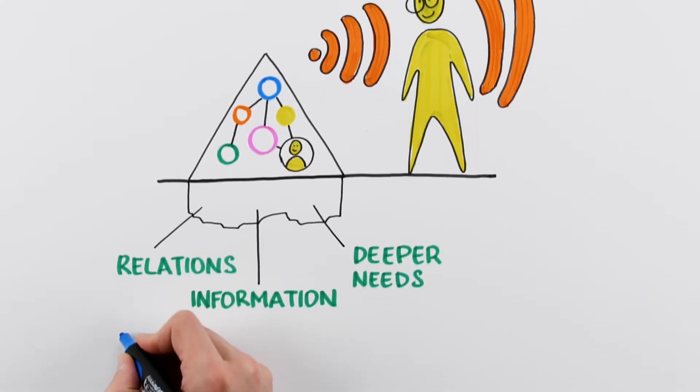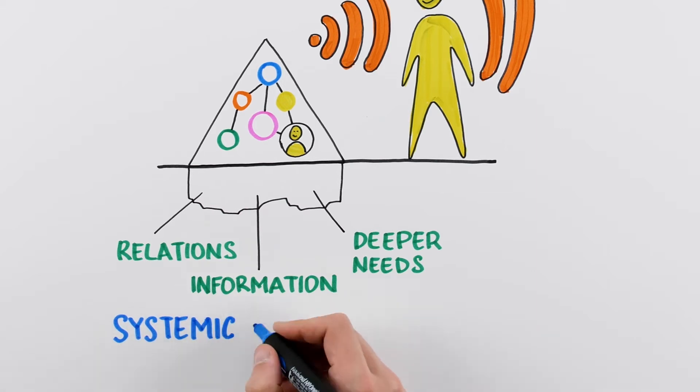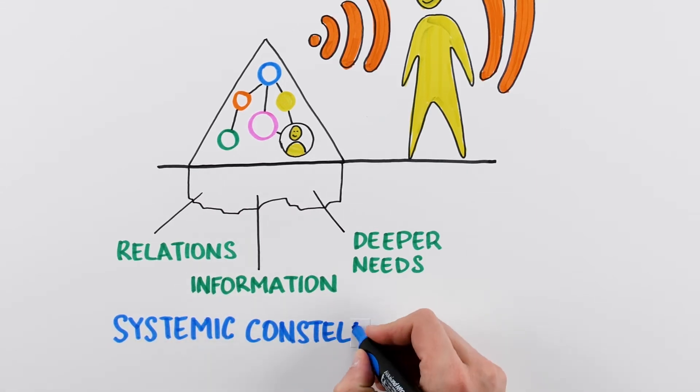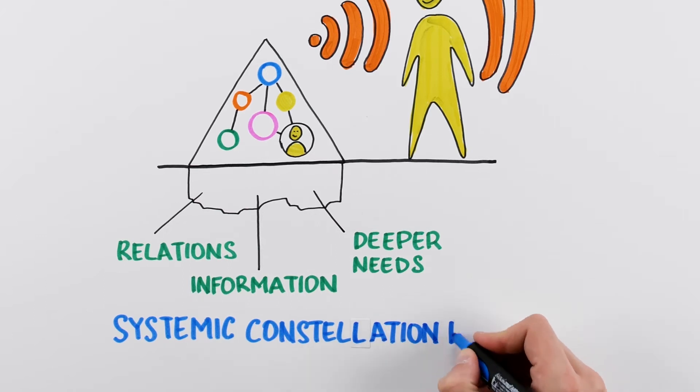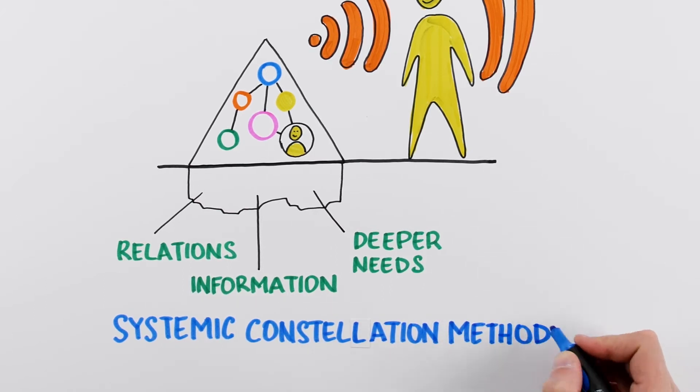The main receiver, in this case, is not our brain, but our whole body. This phenomenon has been witnessed numerous times in the method called systemic constellation.